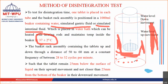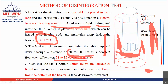The basket moves up and down through a distance of 50 to 60 mm at a constant frequency of 28 to 32 cycles per minute. In one minute it moves up and down 28 to 32 times — it cannot move faster or slower than this frequency range.